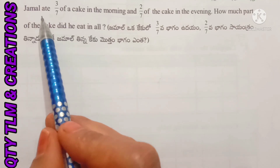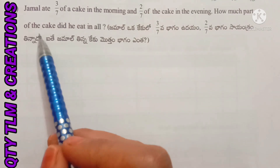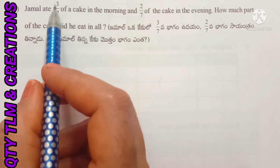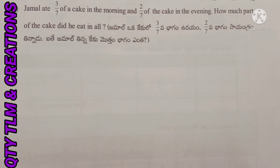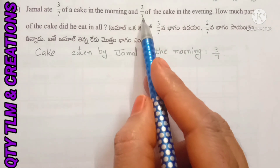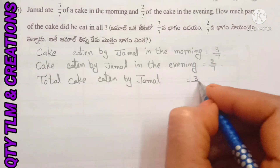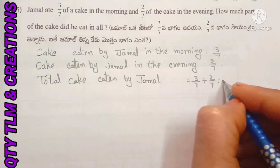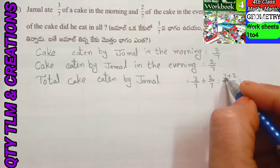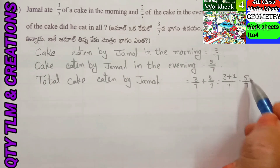Next question: Jamal ate 3 by 7 of a cake in the morning and 2 by 7 in the evening. How much part of the cake did she eat in all? Cake eaten in the morning = 3 by 7. Cake eaten in the evening = 2 by 7. Total cake eaten by Jamal = 3 by 7 plus 2 by 7. Denominators are 7, numerators are 3 plus 2, that equals 5 by 7.